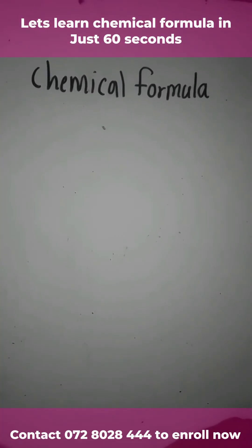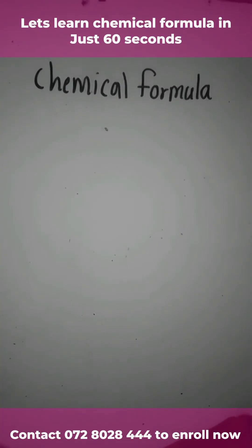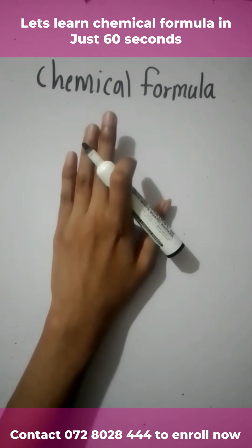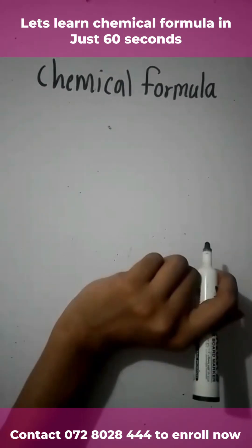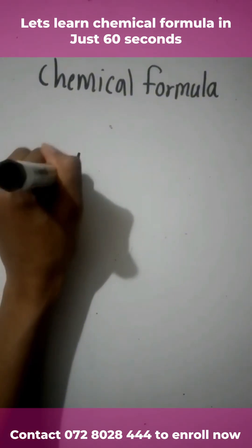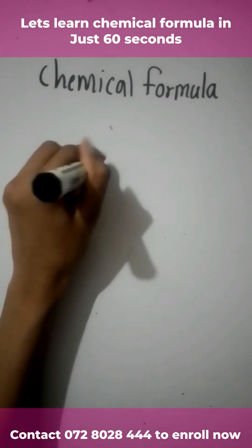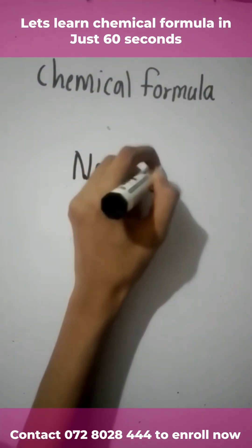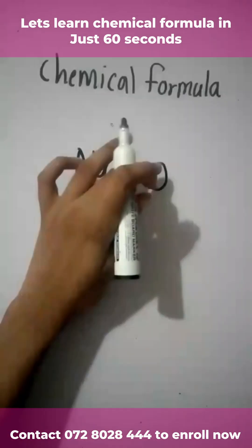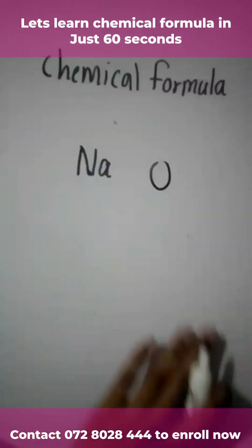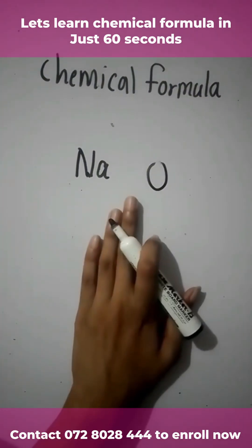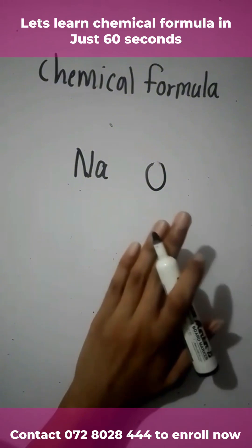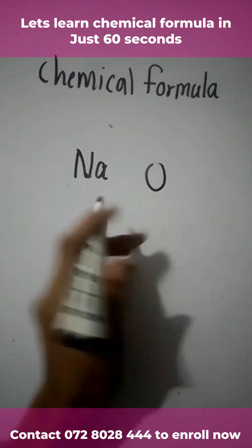Hi everyone, this is Miss Fatima here. Today I'm going to explain how to write a chemical formula. For that, let me take the elements sodium and oxygen. In order to write a chemical formula, you need their valency.